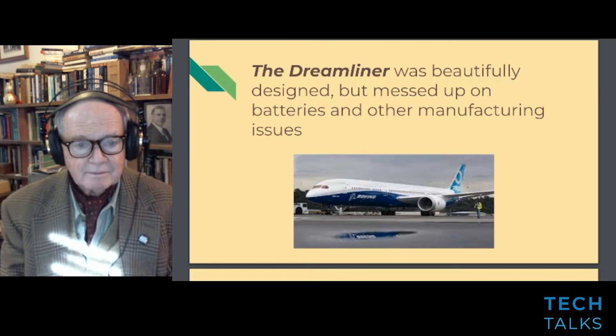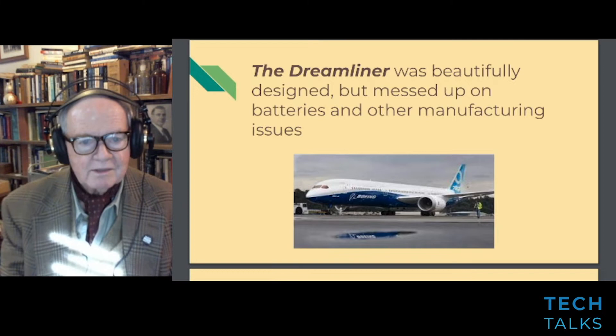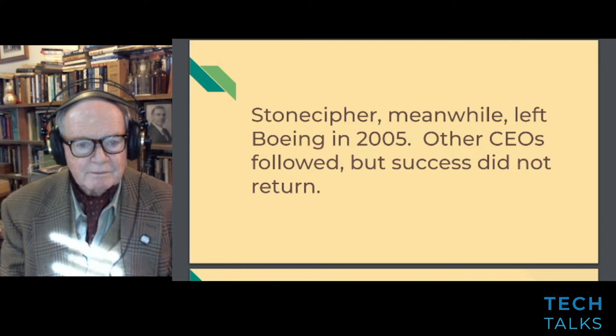This was reflected in the planes that Boeing designed and built. The Dreamliner was beautifully designed but was messed up with battery problems and other manufacturing issues. Stonecipher left Boeing in 2005 after an ethical violation. Other CEOs followed, but success did not return.